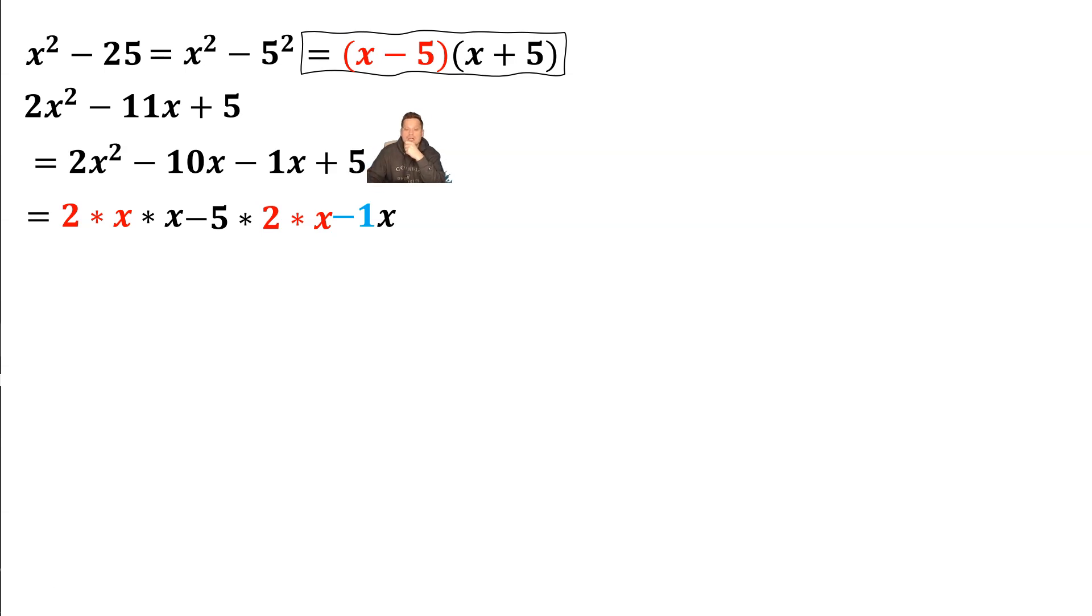It doesn't seem like anything, correct? But they do. The way to see that is as follows. We write that positive 5 as negative 5 times negative 1. Why would I do that? Because now the negative 1s are clearly indicated as a common factor.